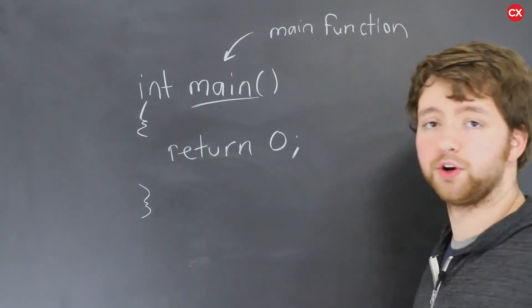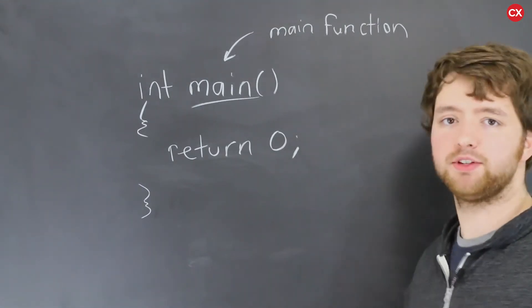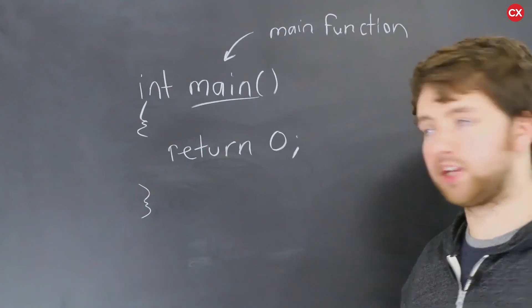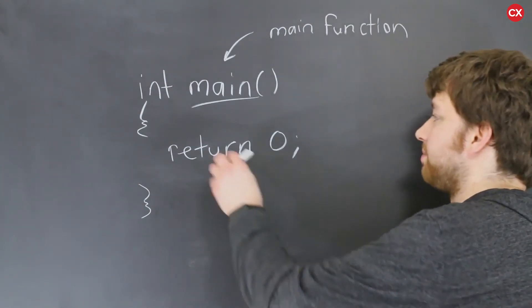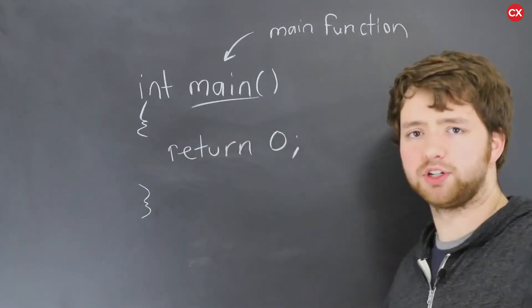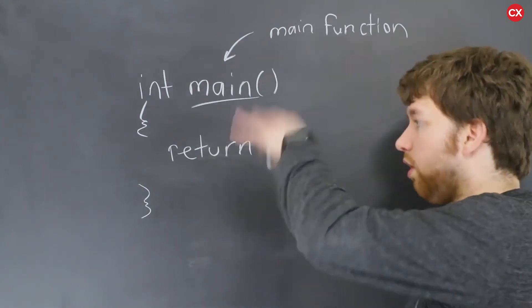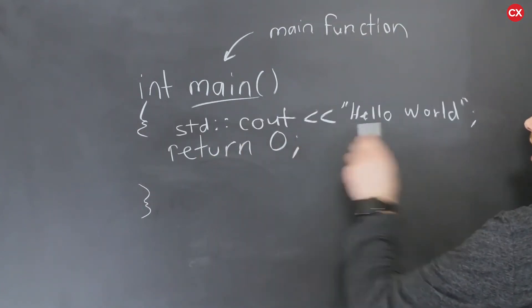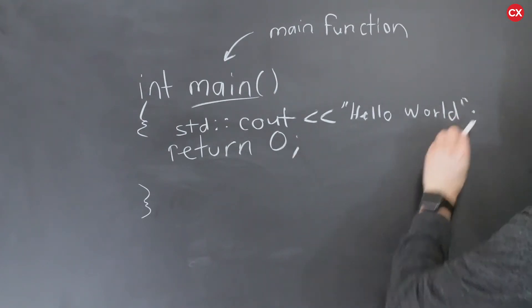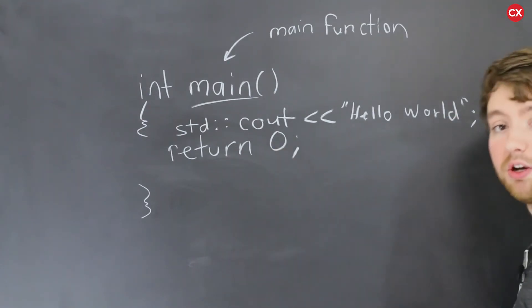Inside of the function, we put what are known as statements. Statements are when we tell the computer to do something. So in this case, we're saying, hey, I want you to return zero, but you can put extra statements before the return. Before you say we're done, I want you to do all these other things. So for example, right here, I could say, std::cout, hello world. That is how we write to the console. And we end that statement with a semicolon. Just like we end this one with a semicolon.